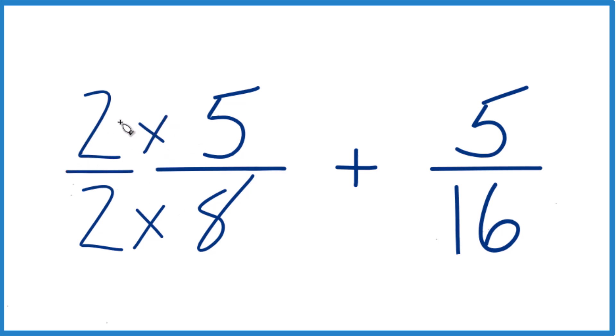Here, 2 over 2, and 2 over 2, that's just 1. So we're multiplying by 1. Don't change the value, just how it's represented.